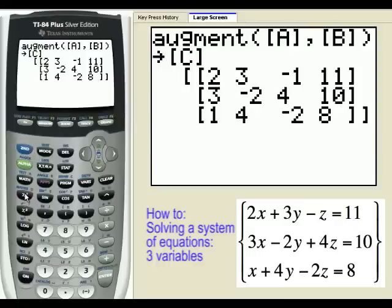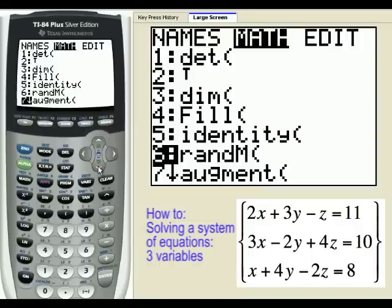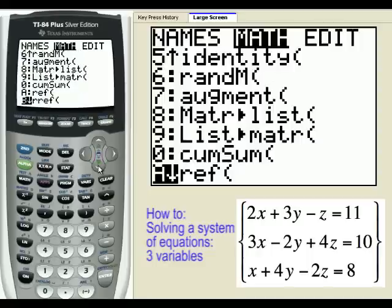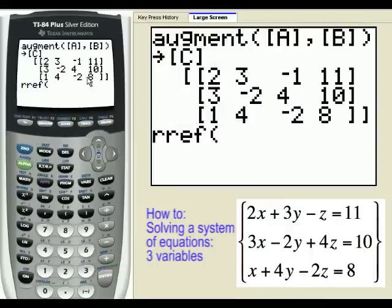If we use the RREF command, which is under math, RREF, reduced row echelon form, and we apply it to this augmented matrix, which remember it was called C.